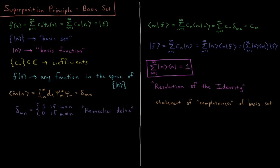The overlap integral of psi_m star and psi_n is the integral from minus infinity to infinity dx — and if there are more dimensions, we integrate over all space in all of them — of psi star_m times psi_n. For Hermitian operators, the psi_n are eigenfunctions of the Hamiltonian operator, the total energy operator, which is a Hermitian operator. If they are orthogonal to one another, they satisfy what's called the Kronecker delta for this overlap.